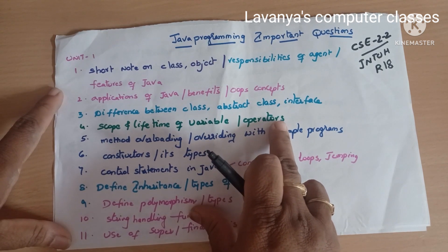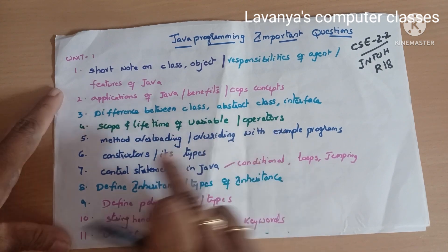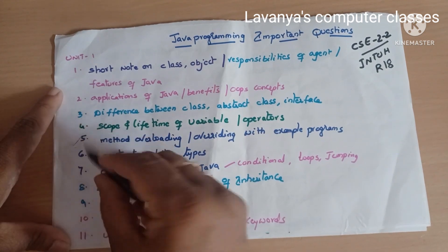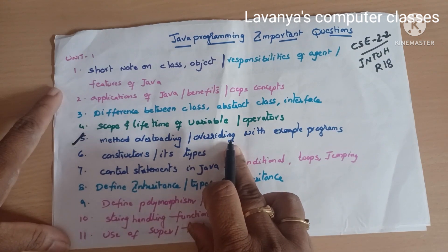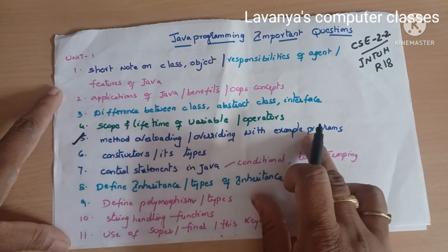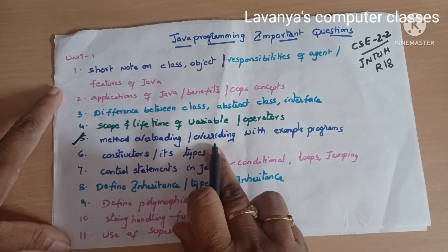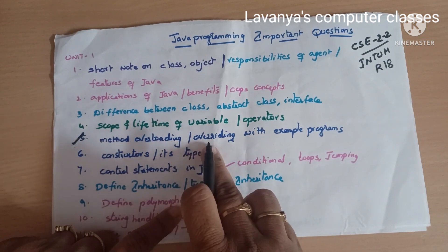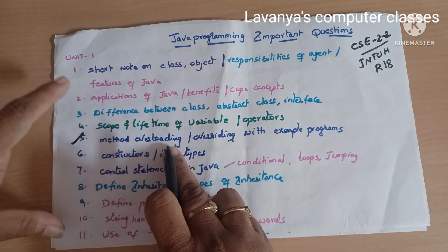A very very important question is method overriding and method overloading with example programs. You must know what is method overloading and what is method overriding — this is a compulsory topic.